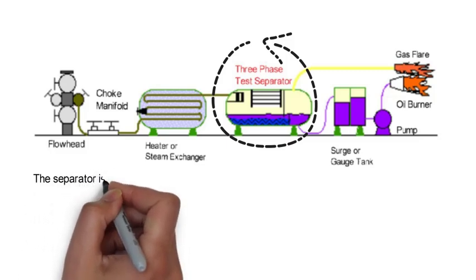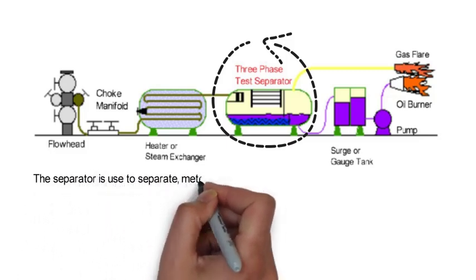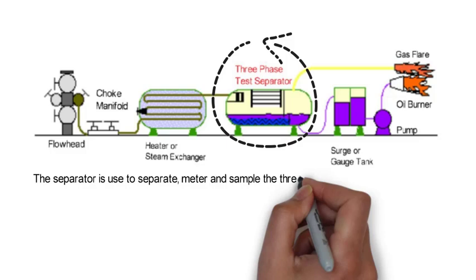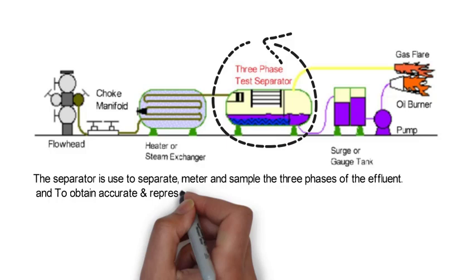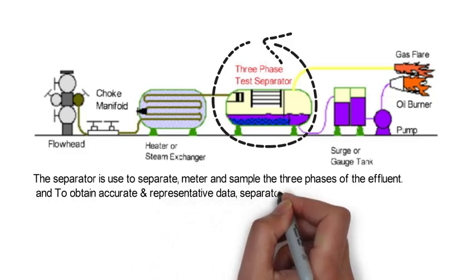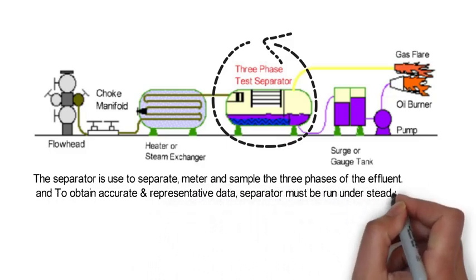The separator is used to separate, meter and sample the three phases of the effluent. To obtain accurate representative data, the separator must be run under steady conditions.